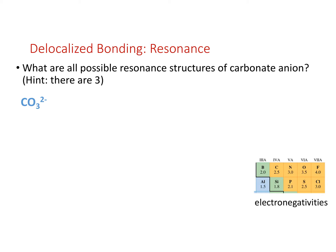Here's a question: what are all possible resonance structures for the carbonate anion CO₃²⁻? Carbon is helium 2s² 2p², oxygen is helium 2s² 2p⁴ with three oxygens — four electrons from carbon, 18 from oxygen, totaling 22. Because we have a 2-minus charge, we add two more electrons for a total of 24 electrons to assign.